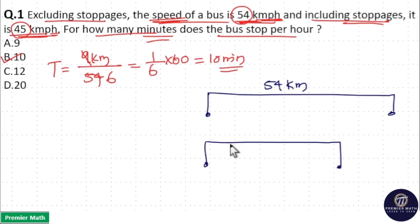And with the stoppages, this ordinary bus covers only 45 kilometers. That is, the extra covered is equal to 9 kilometers by this superfast.